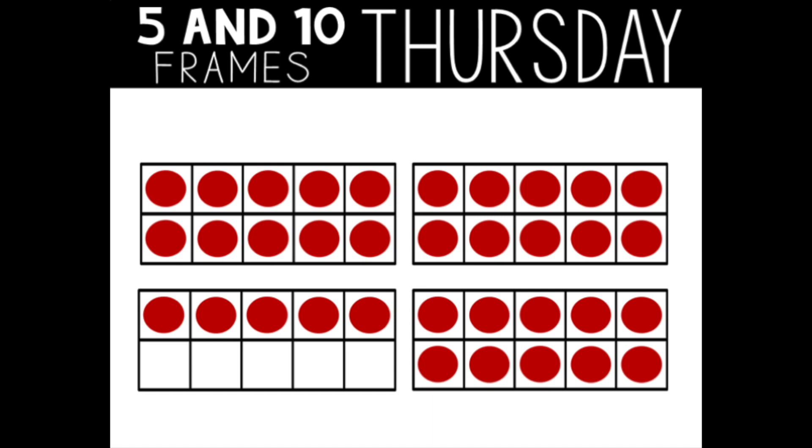This time I'm going to count by 10s and then add on my extra five ones. 10, 20, 30. Then my five lonely ones. Three groups of 10 and five lonely ones equals 35. What did you do to find the answer this time?